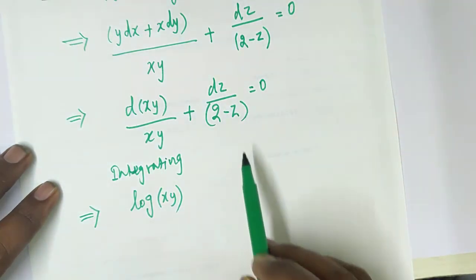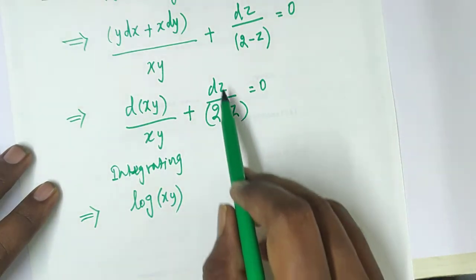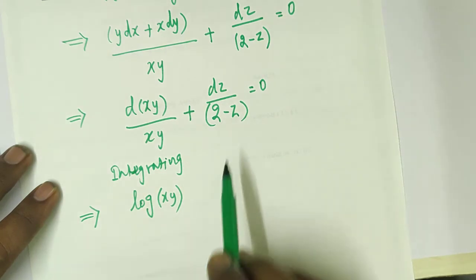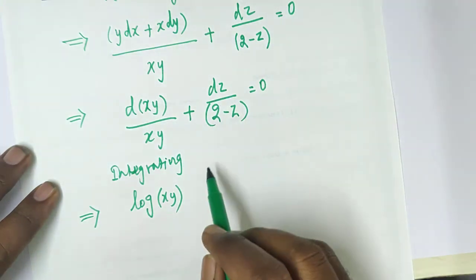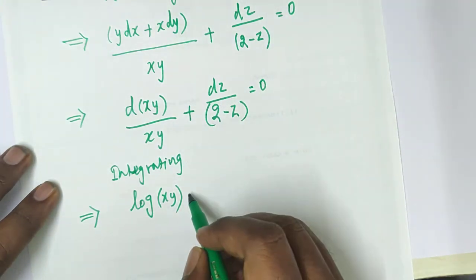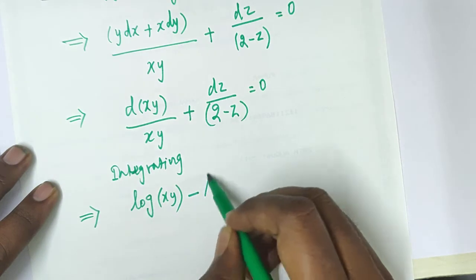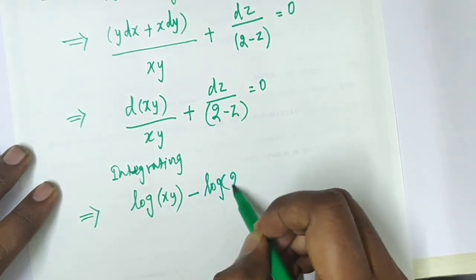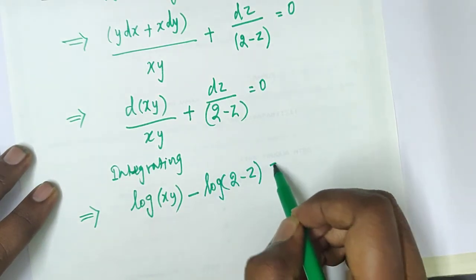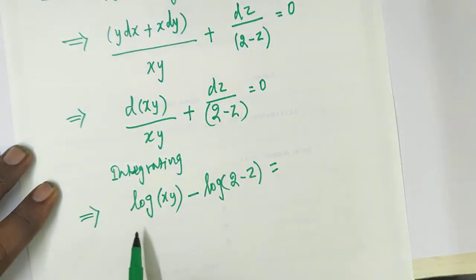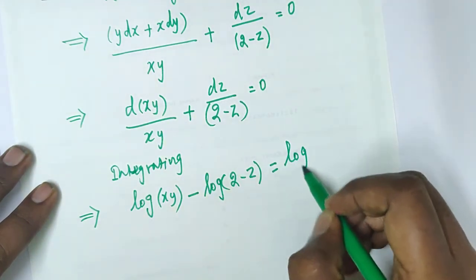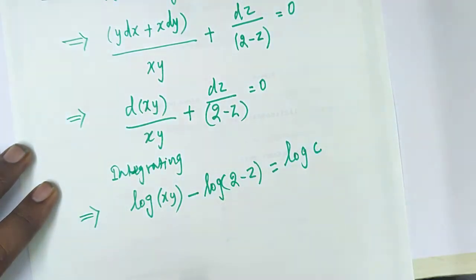For dz divided by (2 minus z), since the derivative of (2 minus z) is negative, this integrates to minus log of (2 minus z). So the full integrated result is: log(xy) minus log(2 minus z) equal to log c.